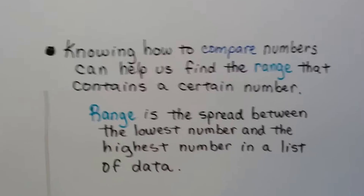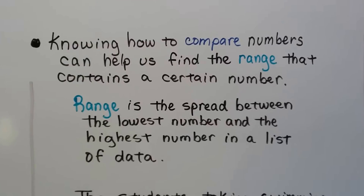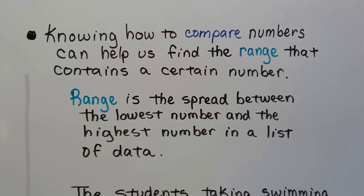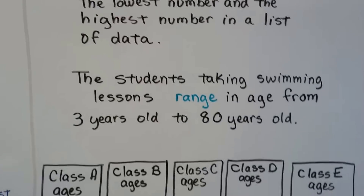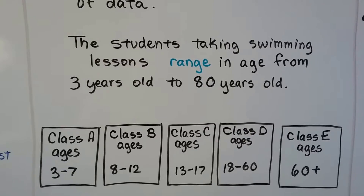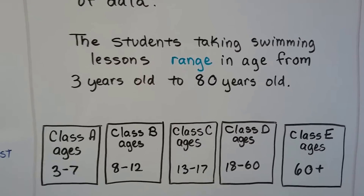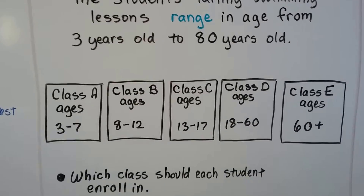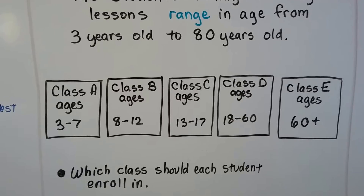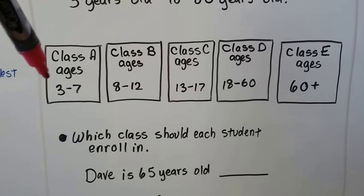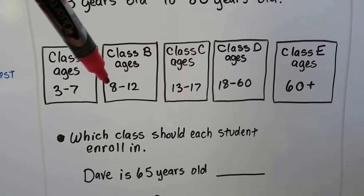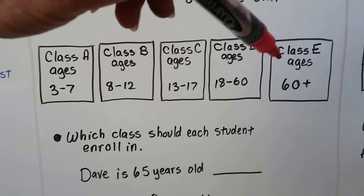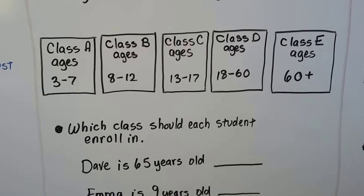Knowing how to compare numbers can help us find the range that contains a certain number. A range is a spread between the lowest number and the highest number in a list of data. Here, students taking swimming lessons range in age from 3 years old to 80 years old, with classes for different age groups. Class A is 3–7 years old, Class B is 8–12, Class C is 13–17, Class D is 18–60, and Class E is 60-plus — that's for seniors.